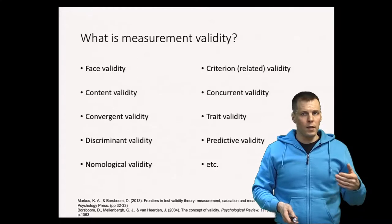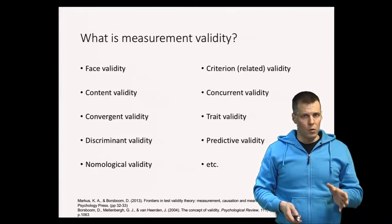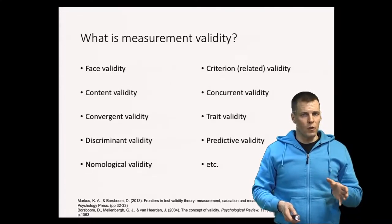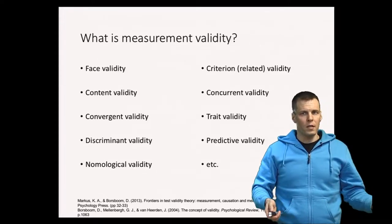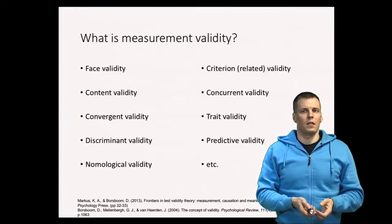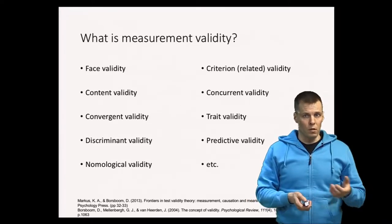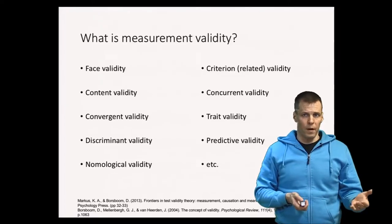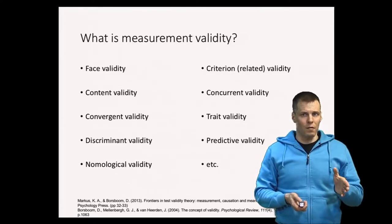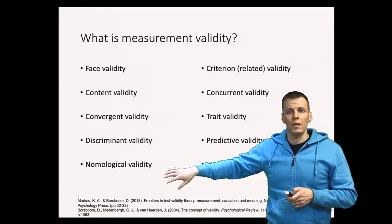One thing that makes the validity literature difficult for a person who just starts reading it is that there are so many different terms. Measurement validity is whether an indicator measures what it is supposed to measure. That is fairly straightforward to define, but it gets into complications because of all this terminology.